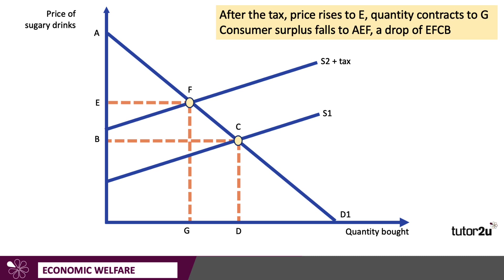The new equilibrium, of course, is at point F. As a result, consumer surplus will fall from A, B, C to A, E, F — and that's a reduction of E, F, C, B. Keep in mind, in the exam, if you get a question on this, you want to show consumer surplus — make sure your demand curve cuts the y-axis. It's also a good idea to label key points rather than shade. Labelling is always clearer for the examiner to mark compared with shading.